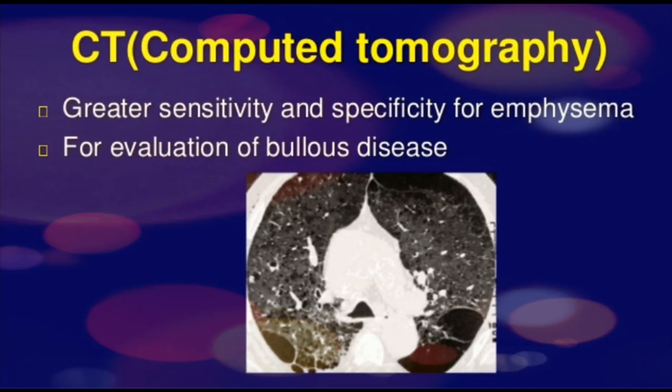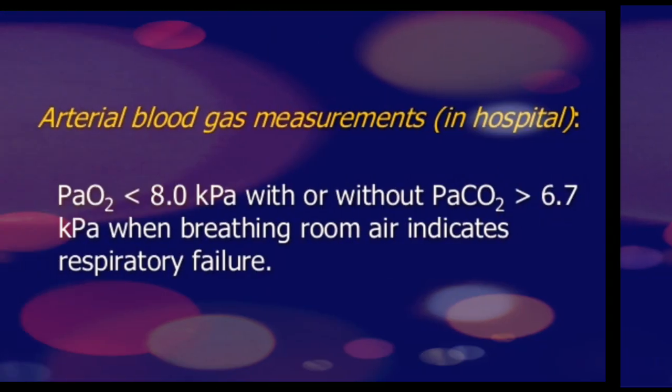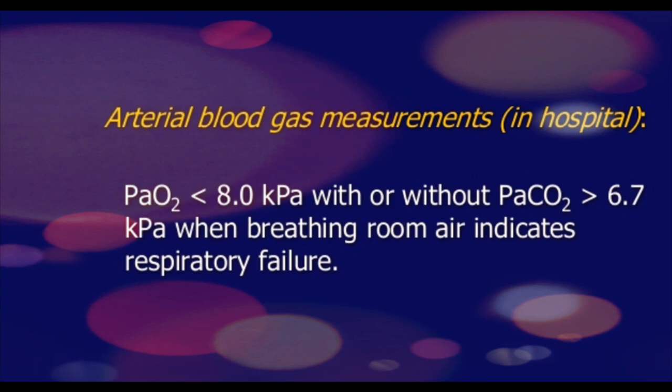CT scan has greater sensitivity and specificity for emphysema and for evaluation of bullous disease. Laboratory examination includes a full blood count or CBC which may show leukocytosis as elevated WBC or TLC count. Sputum examination shows the type of bacteria or other organisms causing infection. ABGs show hypoxemia with or without hypercapnia — that is, low partial pressure of oxygen with or without elevated partial pressure of carbon dioxide.